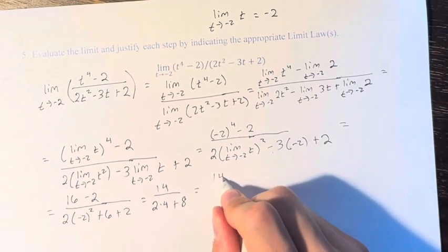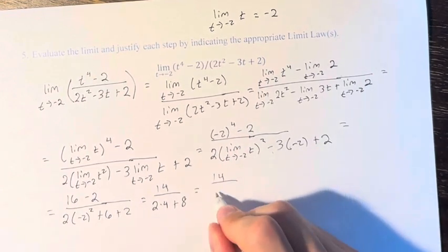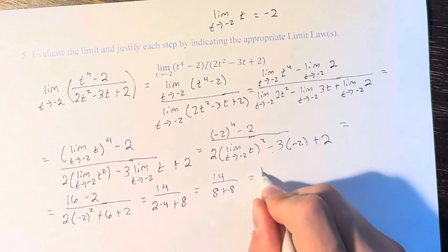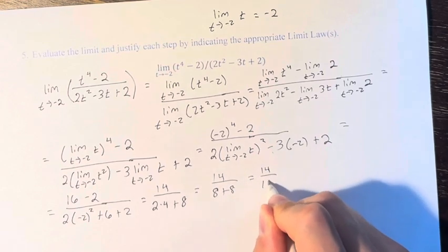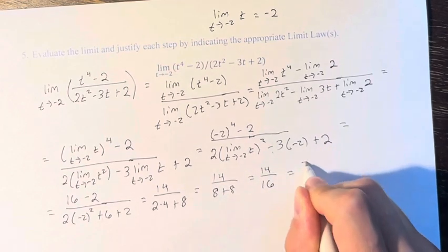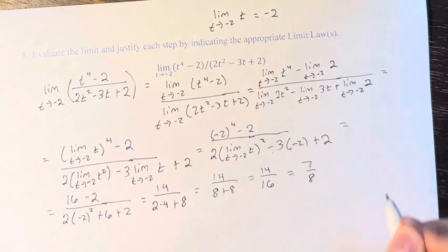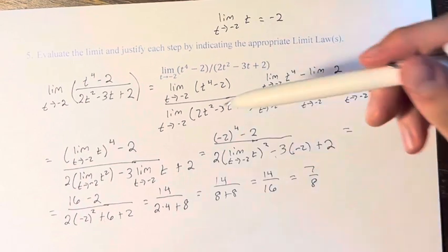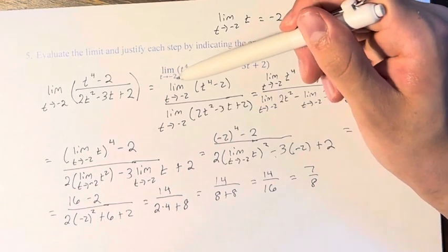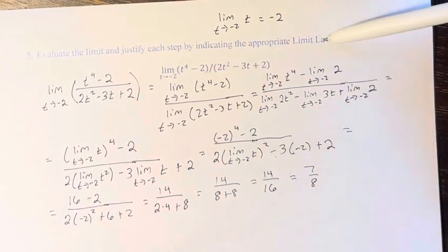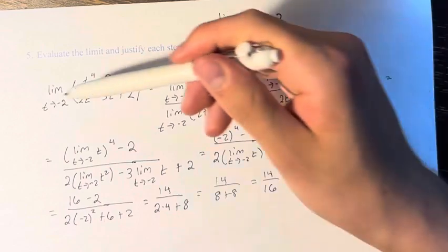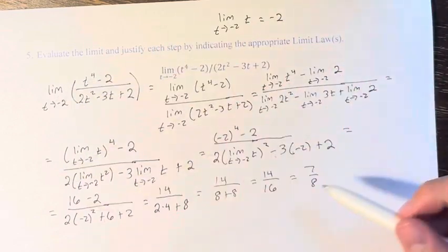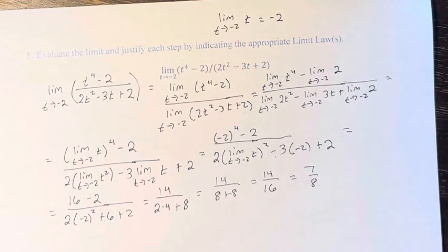This is 14 over 8 plus 8, which is 14 divided by 16, equal to 7 divided by 8. And again, you could have plugged in negative 2 from the start, but they're asking us to go step by step with the limit laws, so that's what we've done. The answer is equal to 7 over 8. Thank you.